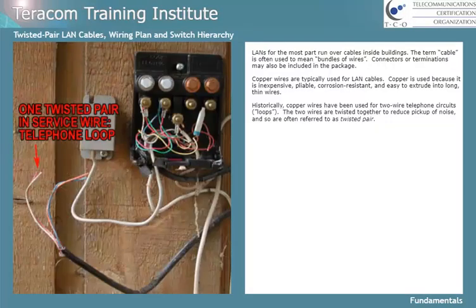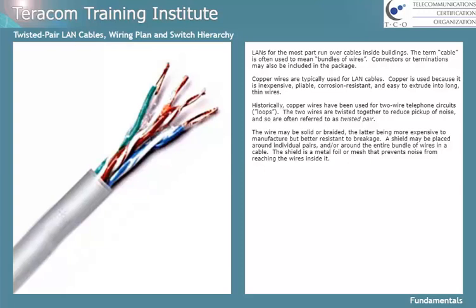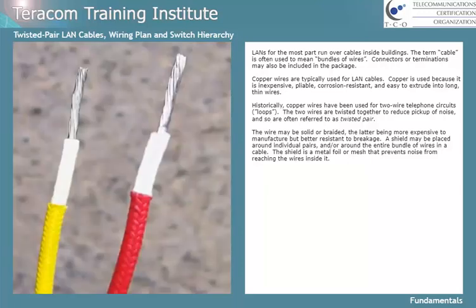Historically, copper wires have been used for two-wire telephone circuits called loops. The two wires are twisted together to reduce pickup of noise, and so are often referred to as twisted pair. The wire may be solid or braided, the latter being more expensive to manufacture but offering better resistance to breakage.